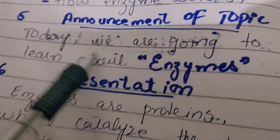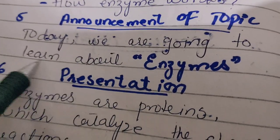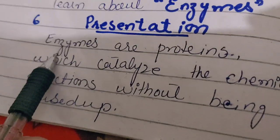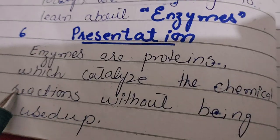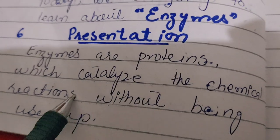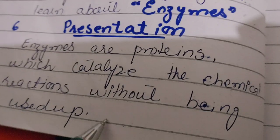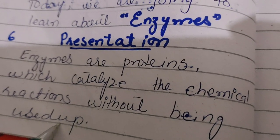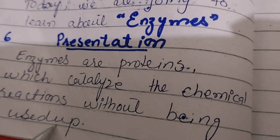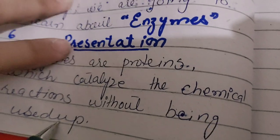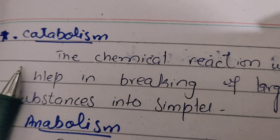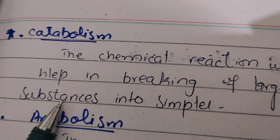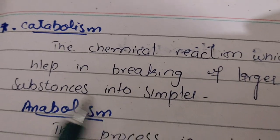Hello everyone, today we're going to learn about enzymes. Enzymes are proteins which can catalyze chemical reactions without being used up — meaning at the end of the reaction, enzymes are not consumed but they enhance the chemical reaction. Enzymes have two types: catabolism and anabolism.